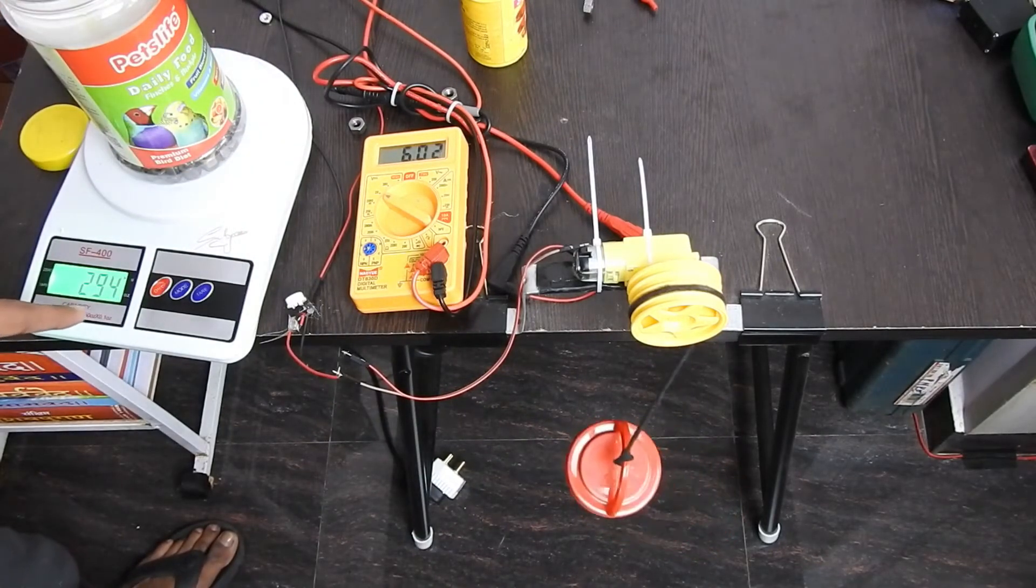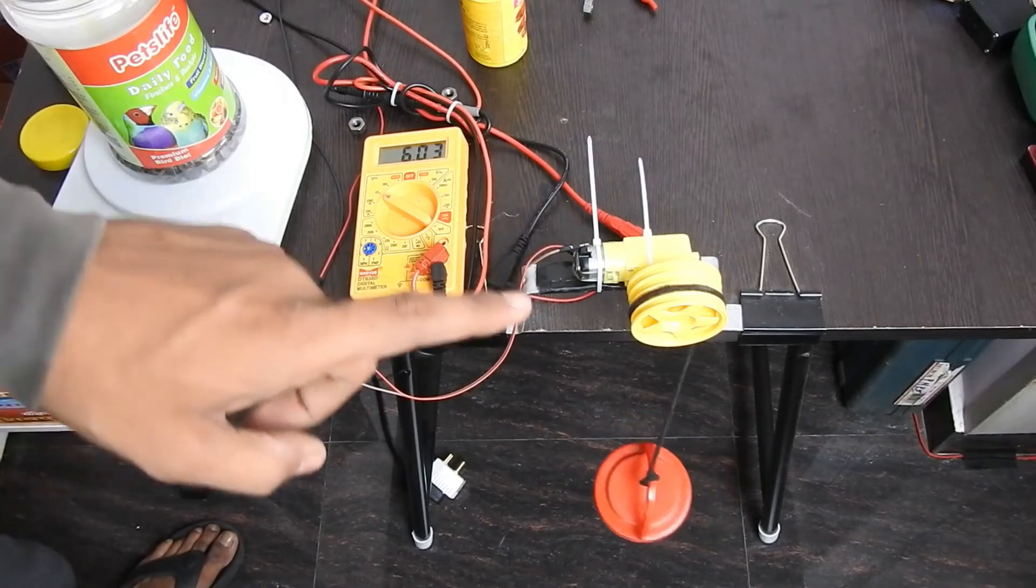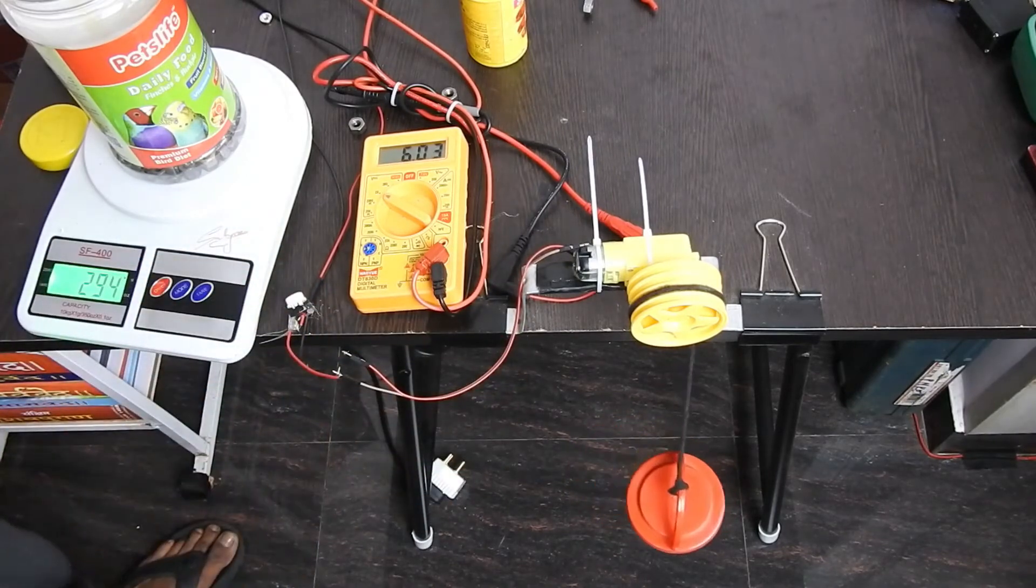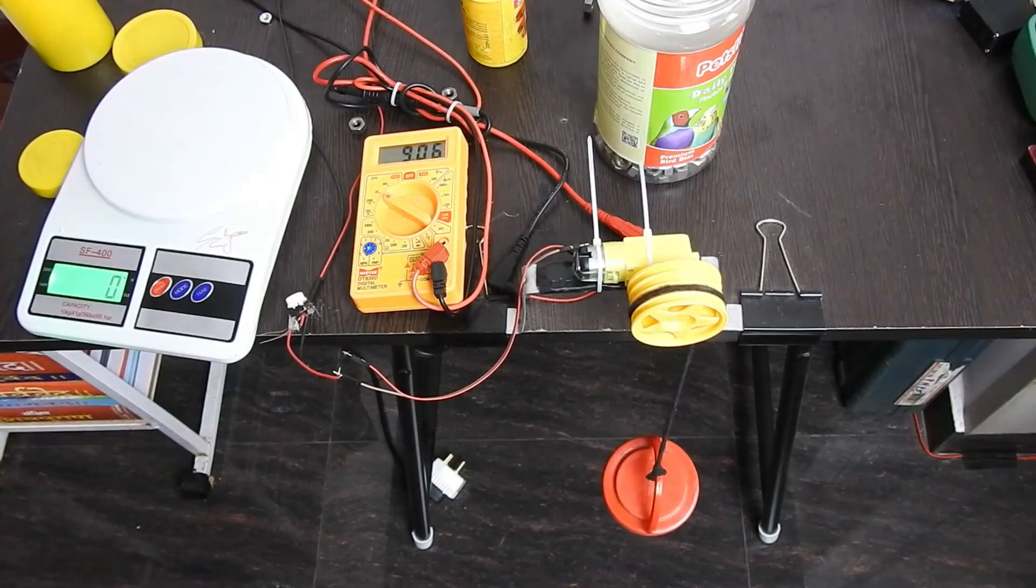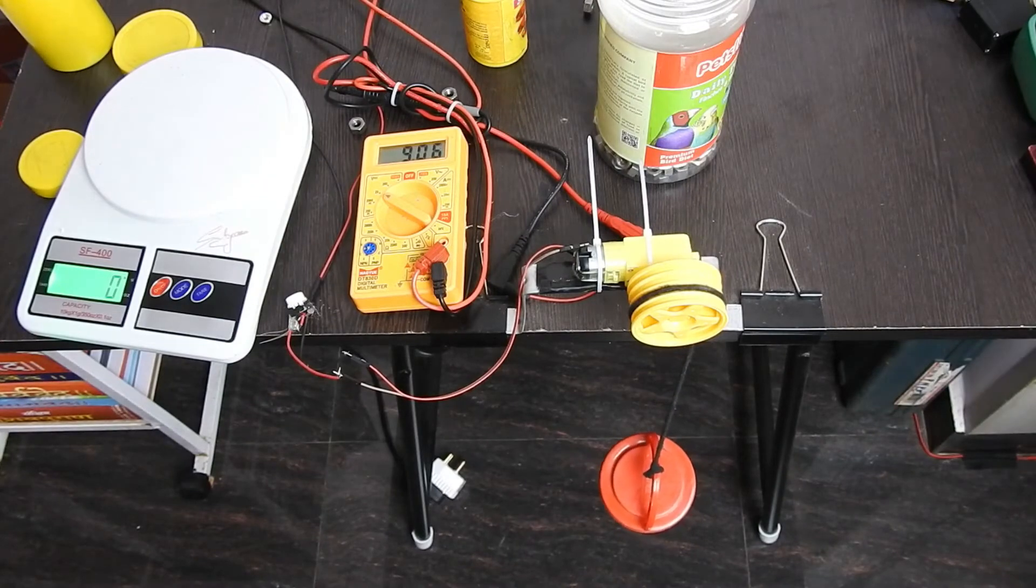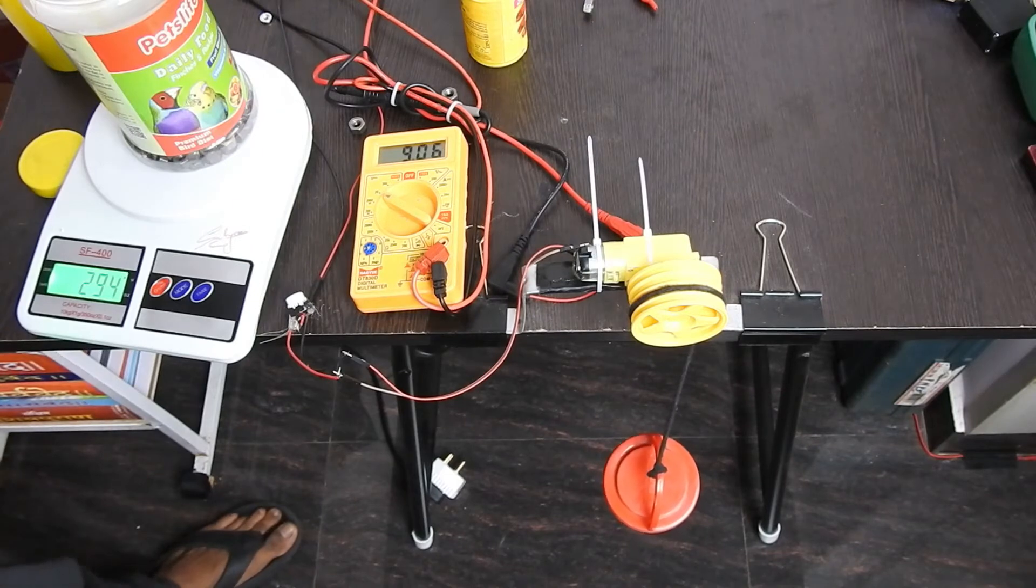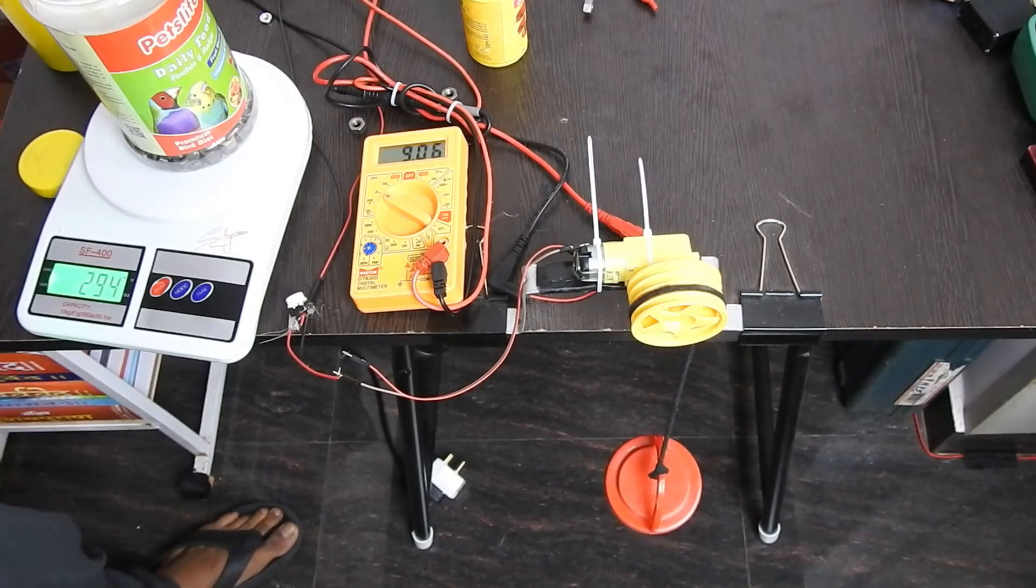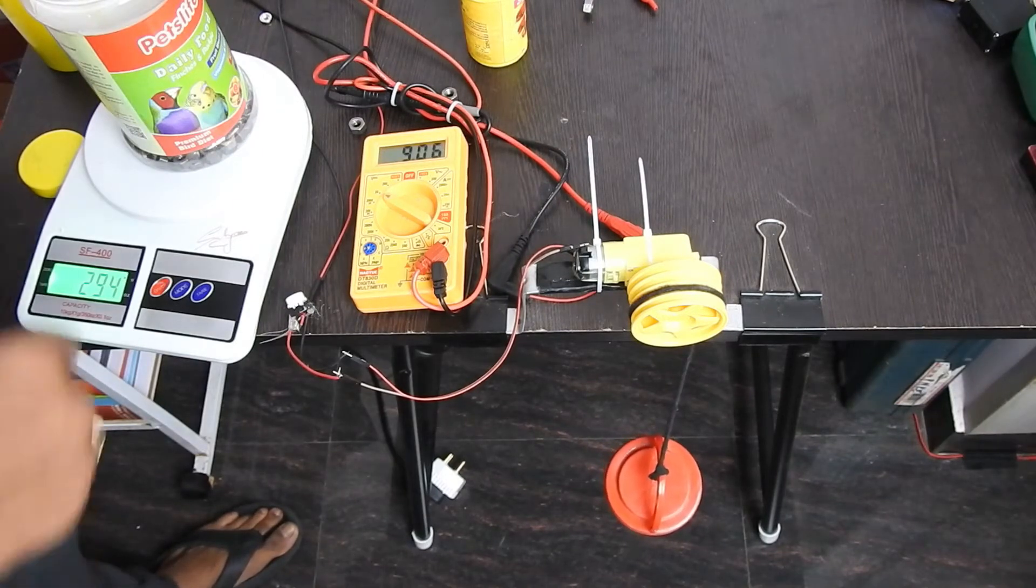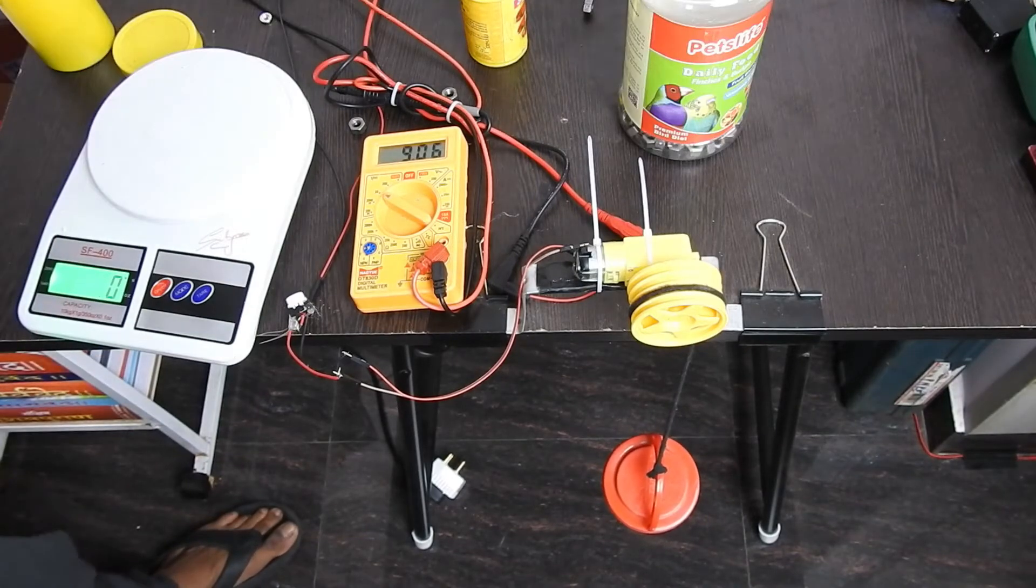Now let's try at the optimal voltage of 9 volts. Currently the weight is 294 grams. Let's start with 350, so we need 55 grams.